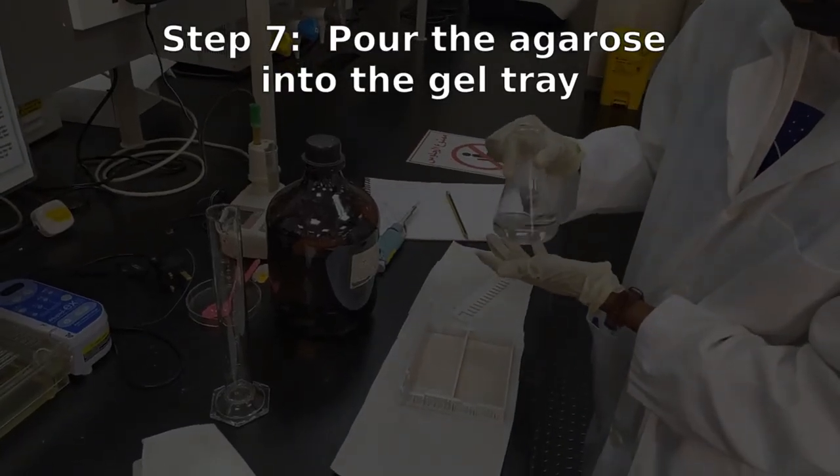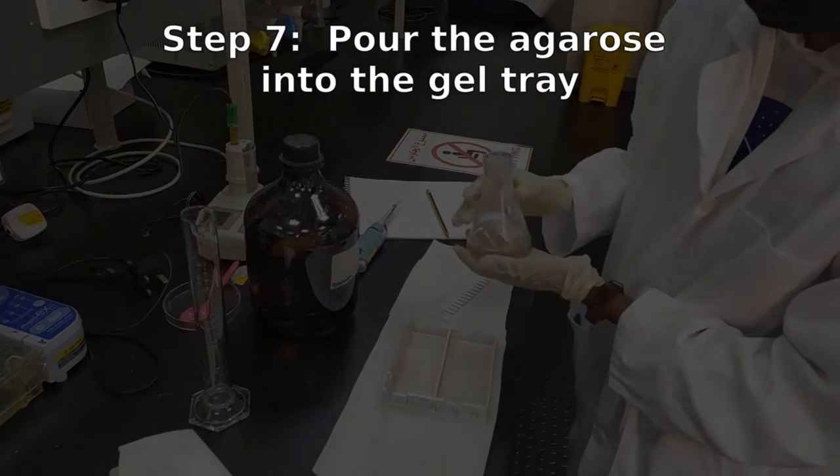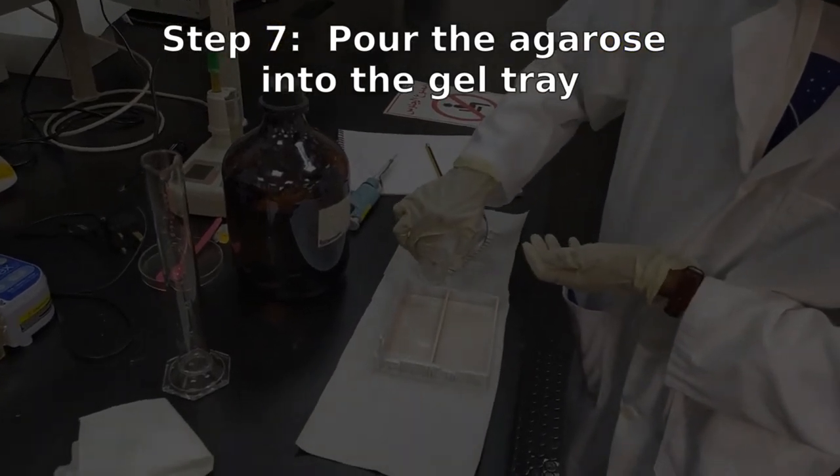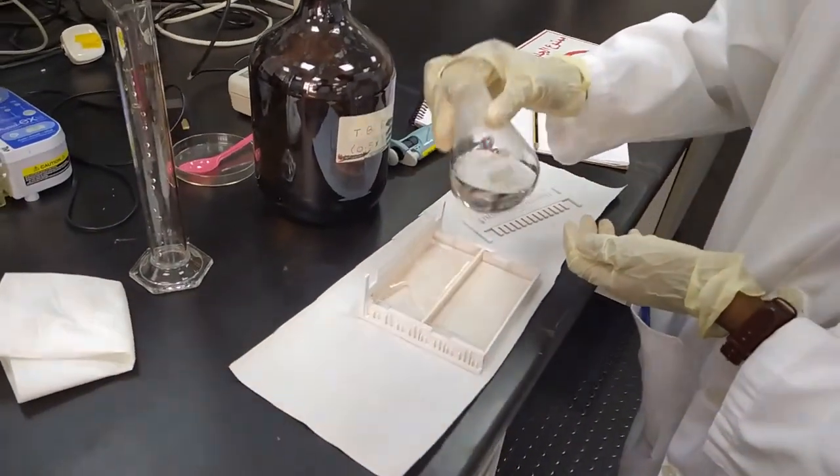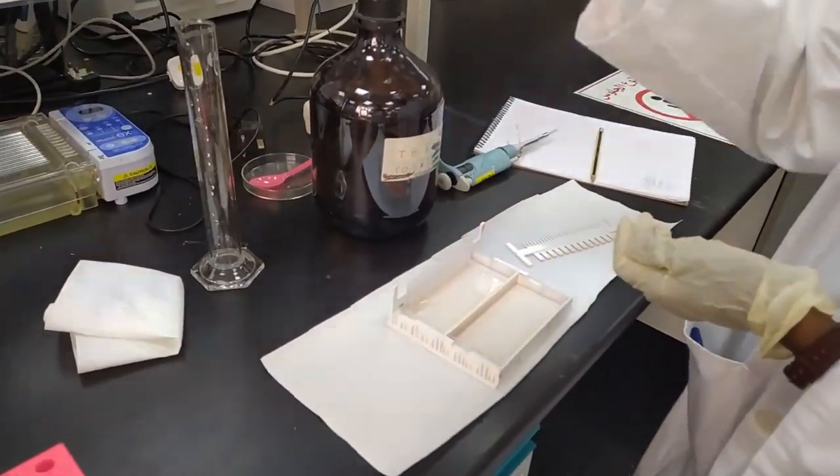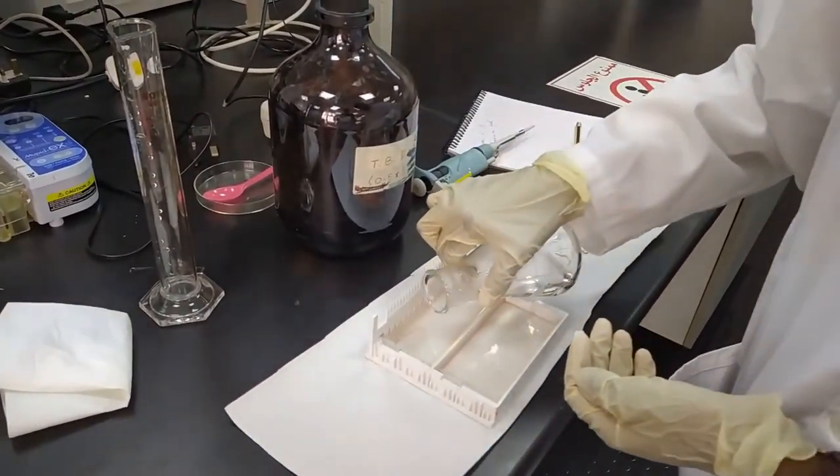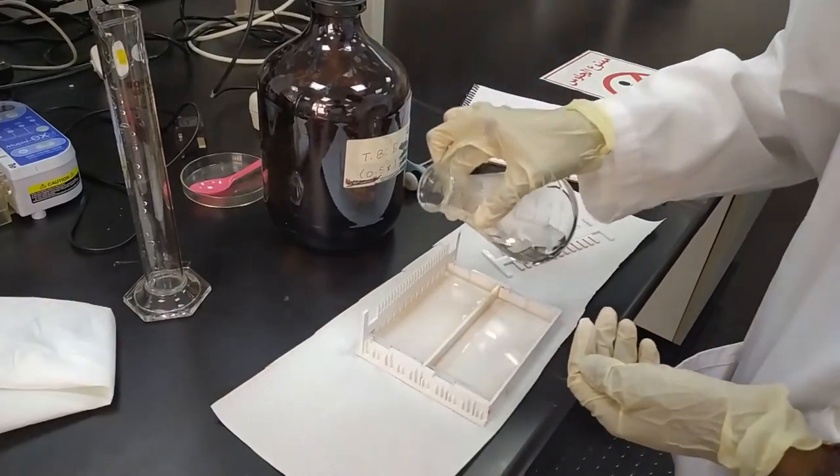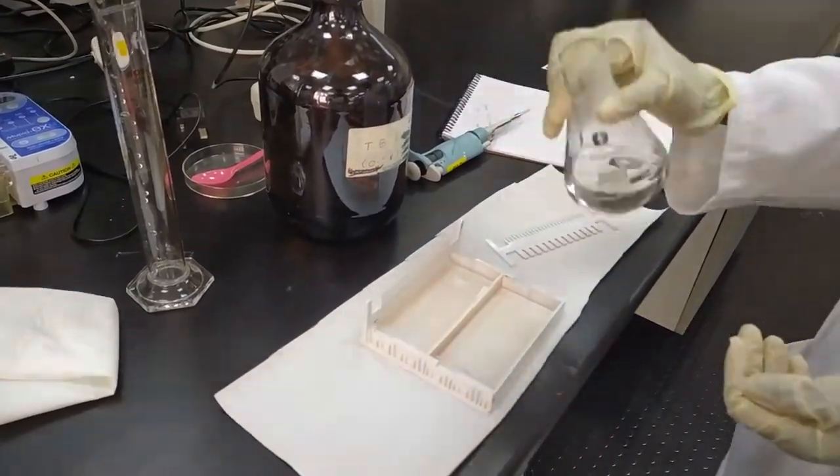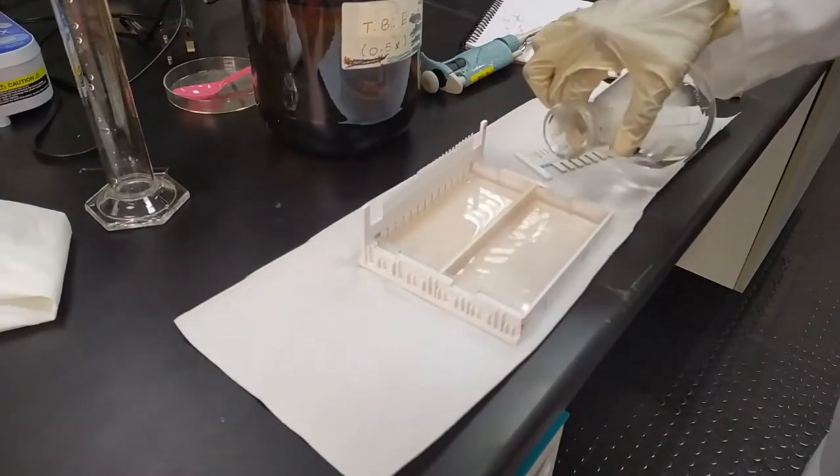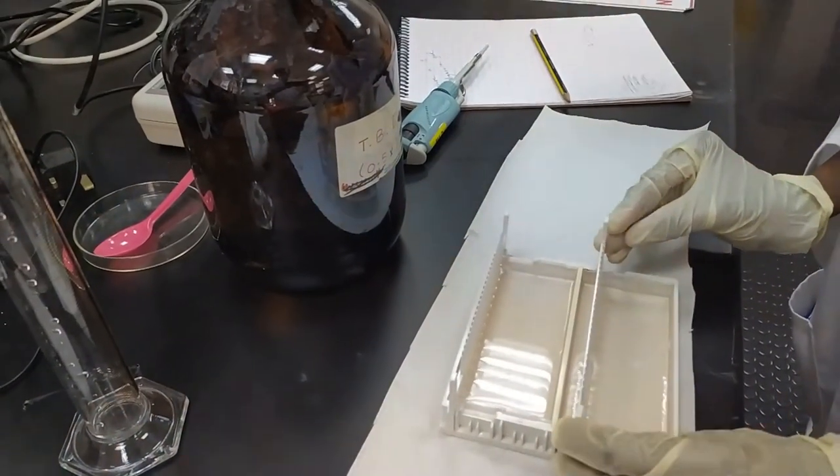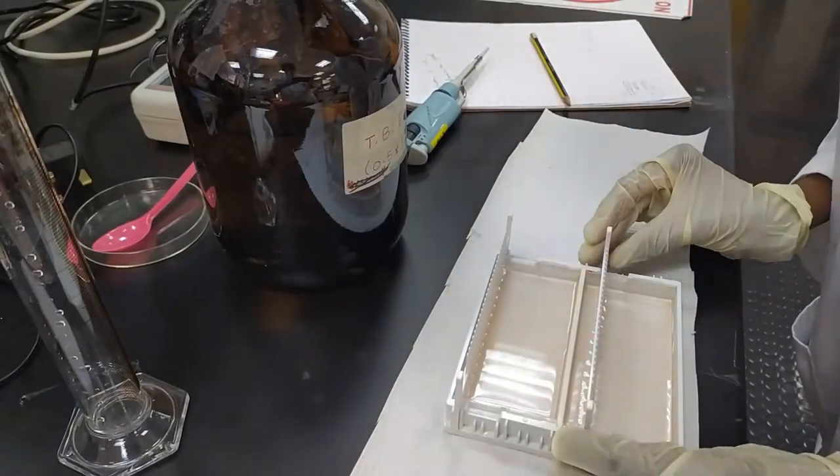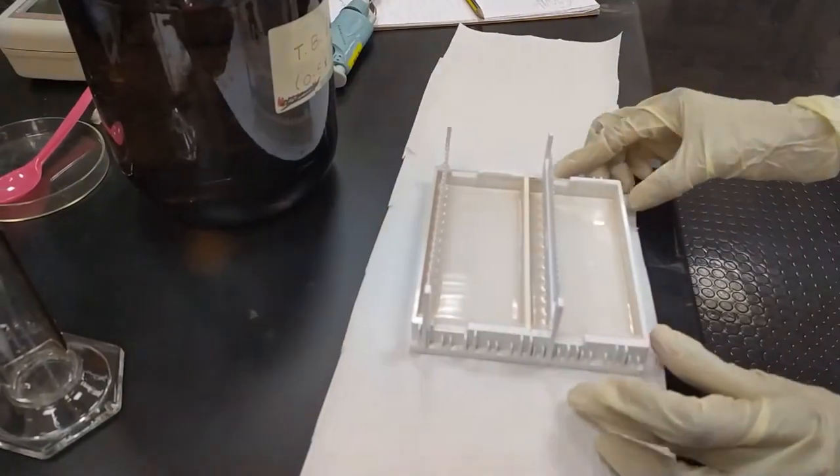So, in this case here, we will be pouring two gels. One of them already has the combs in place. So, you can pour the gel with the combs already in place. It's simply going to go around the combs and it's going to set. Or you can pour the agarose first and insert the combs afterwards. The key here is to make sure that the gel comb is in nice and straight so that you have a good starting point for your DNA to migrate.